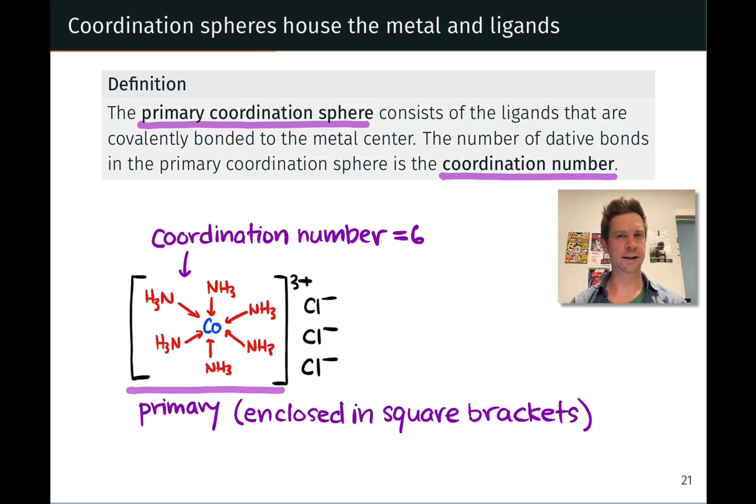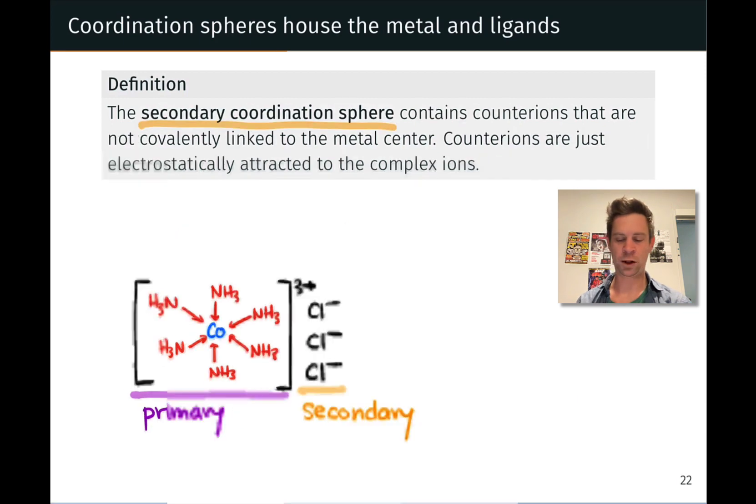Now what about those chlorides? How do those fit into the conversation? Well, those chlorides are part of what we call the secondary coordination sphere. The secondary coordination sphere includes counter-ions within a coordination compound that are necessary for electrical neutrality but are not covalently bonded to the metal center.